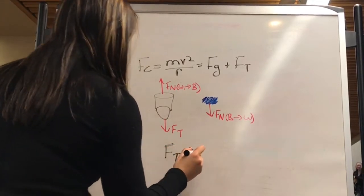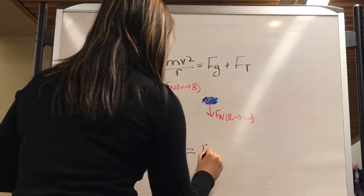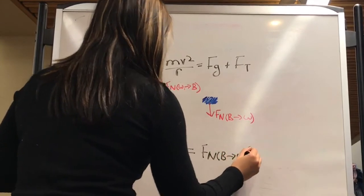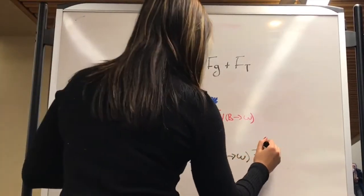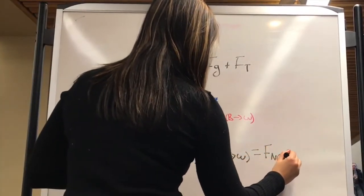The force of tension is equal to the normal force of the bucket on the water, because the tension is what is causing the contact between the water and the bucket at the top of the circular trajectory.